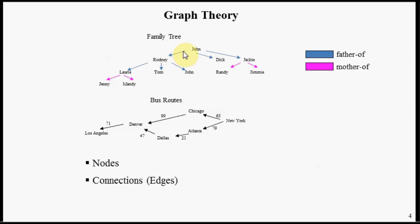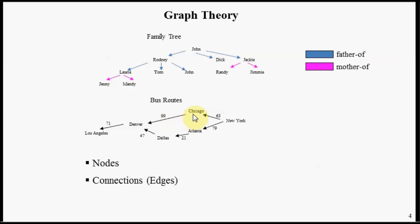Sometimes in graphs, you have a semantic relationship associated with these arrows. In this family tree graph, we have a 'father of' relationship and a 'mother of' relationship. Sometimes with graphs, you have scalar values associated with the connections. In this bus routes example, the scalar value represents a cost of going from one city to another.